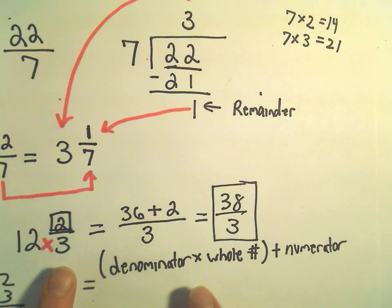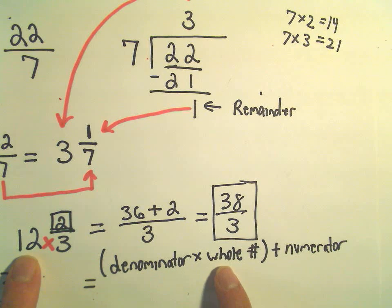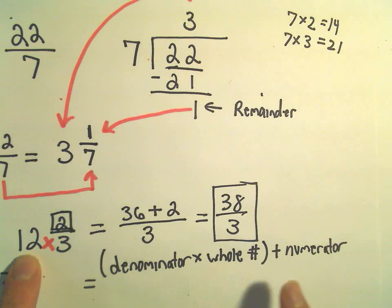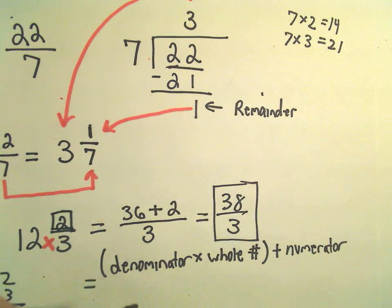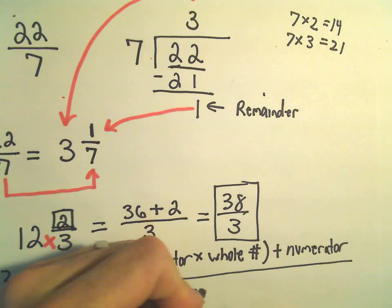So that's what we did. We took the denominator, which was three, we multiplied it by the whole number out front, which was twelve, we got thirty-six, and then we added to that the value in the numerator.